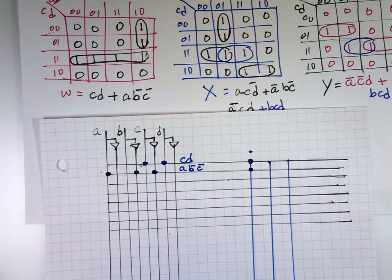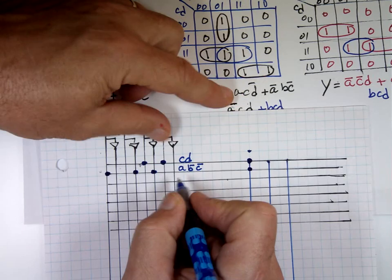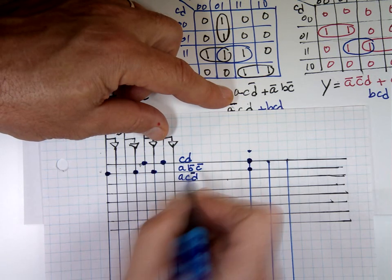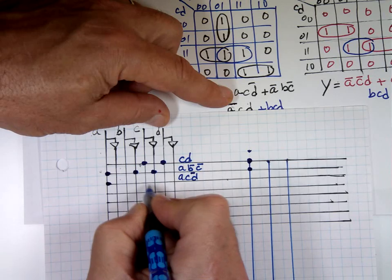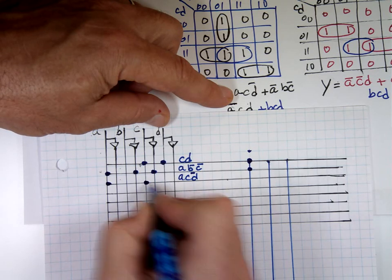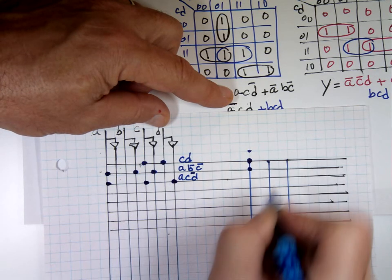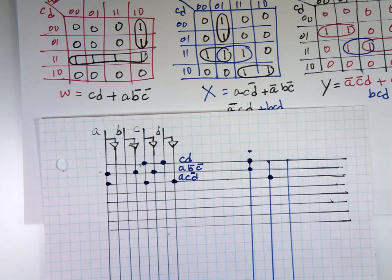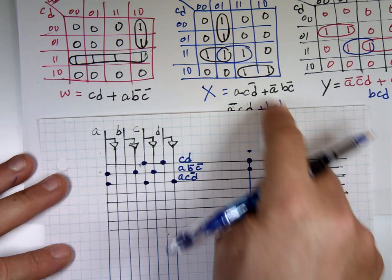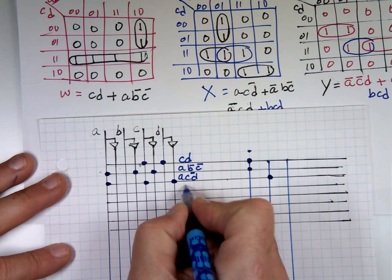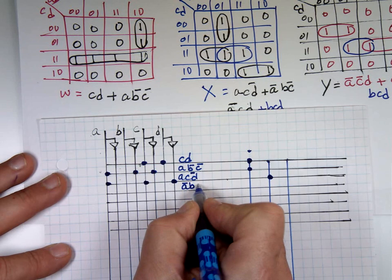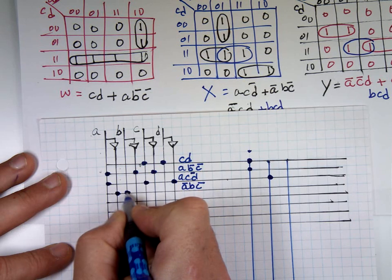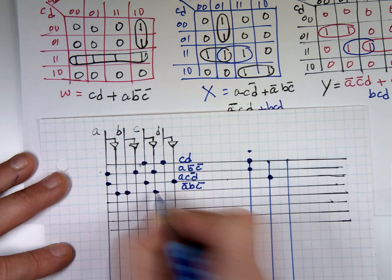The next one is ACD̄ — attach A, C, D̄ — and that's for X. The next one is ĀBC̄ — and that's also X.